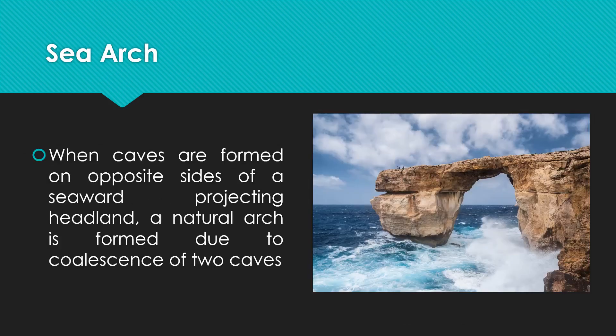Sea arc. When caves are formed on the opposite side of a sea-wide projecting headland, a natural arc is formed due to the union of two caves. This case of continuous erosion on one headland projection results in the feature of a sea arc — ultimately the arc forms as the caves unite through the ocean side.